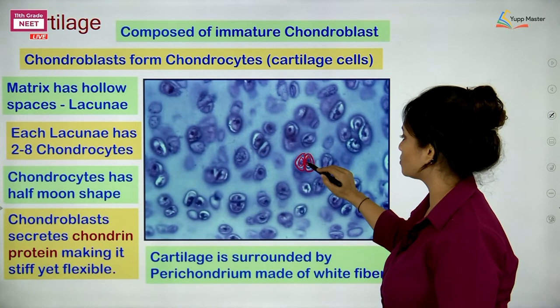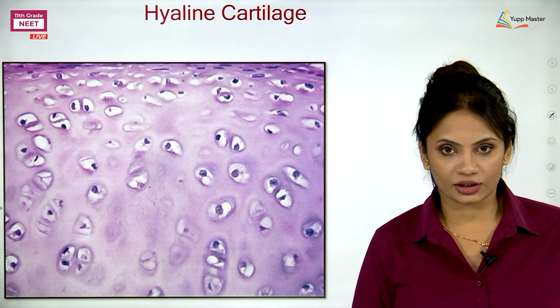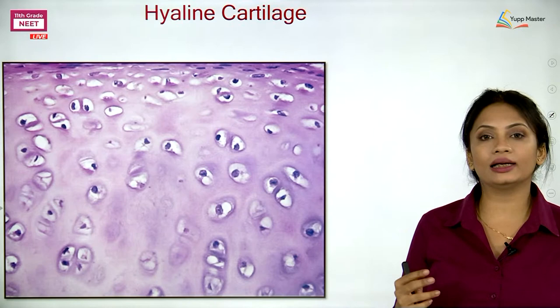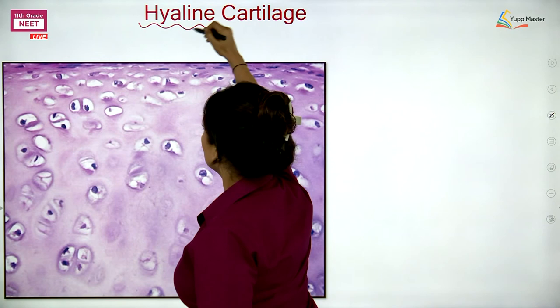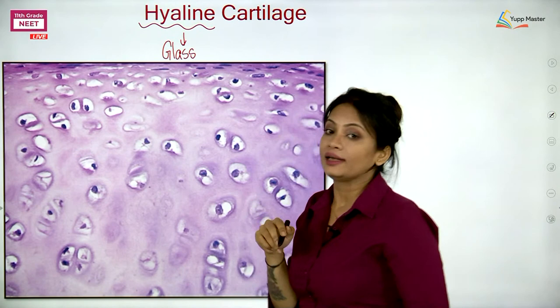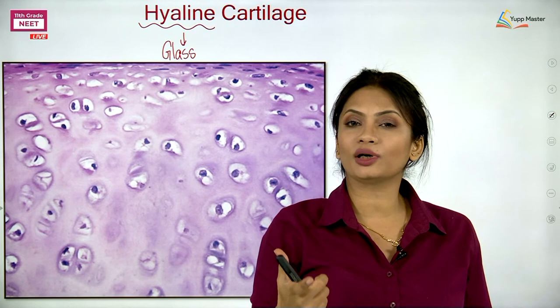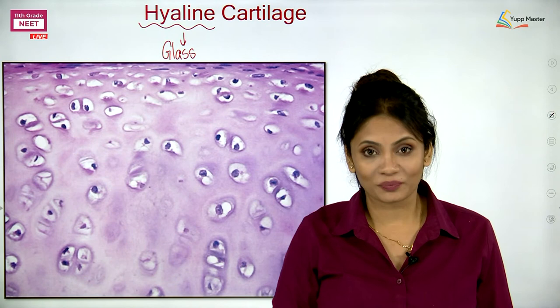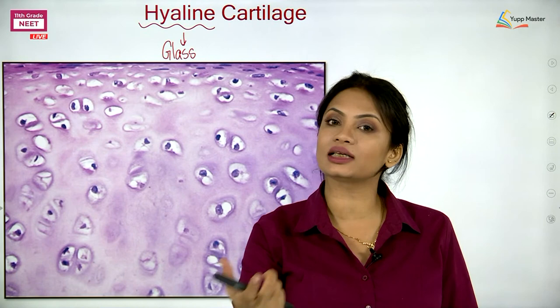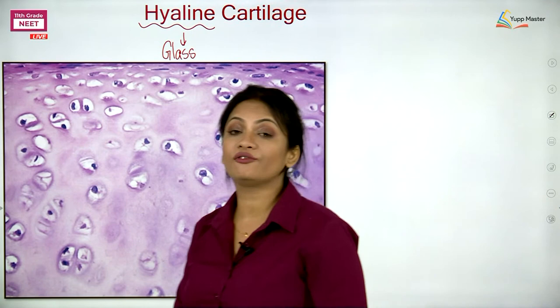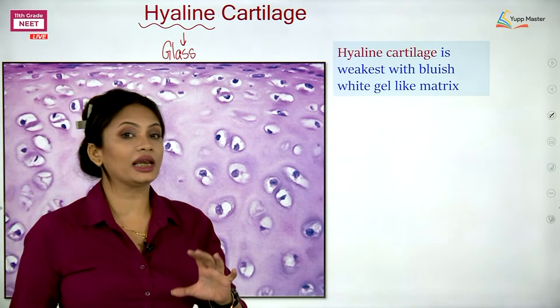Now we come to the different types of cartilage. The first type is hyaline cartilage. The word hyaline means glass — so this is a glass-like cartilage. Glass is easily breakable, and similarly this cartilage is very sensitive and easy to break. It is the weakest cartilage and has a bluish gel-like matrix.